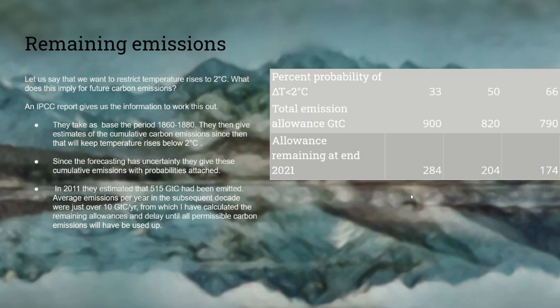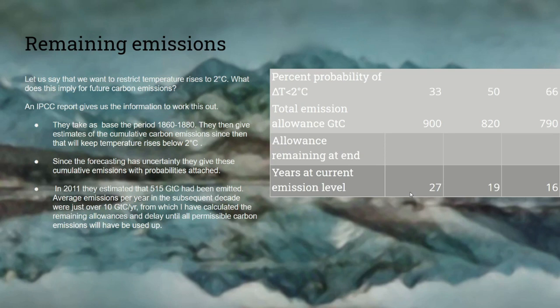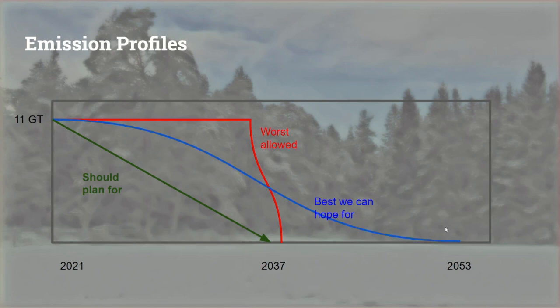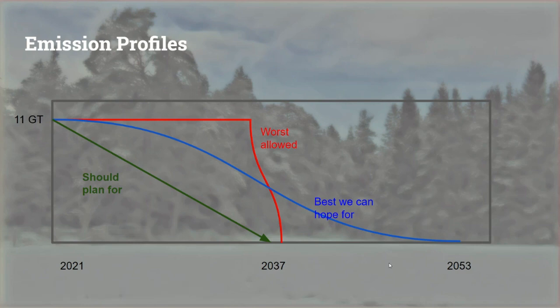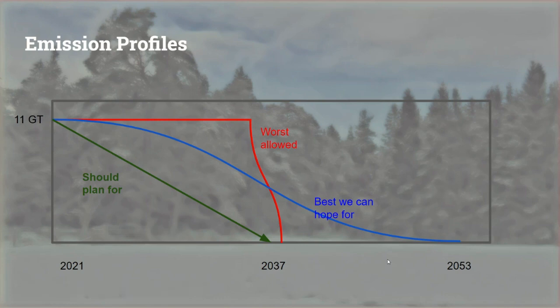These are my calculations of the remaining allowance and the number of years available at the current emission level. Even to be two-thirds safe, there are only 16 years left — we're talking about 2037. In the worst case, you emit at the current level right up to then and cut off rapidly by 2038. That's not very feasible. The best case is a gradual cut-off, ending with the world being carbon-free by 2053.